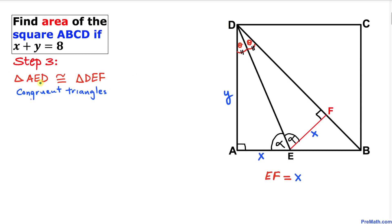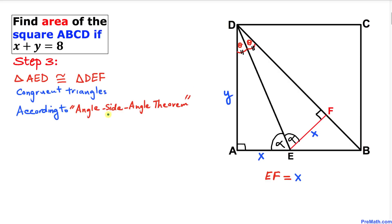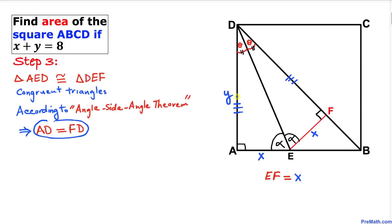We conclude that triangle AED and triangle DEF are congruent triangles according to the Angle-Side-Angle theorem. Both triangles share side DE in common. Since the triangles are congruent, AD equals FD — so if AD is y, then FD is y as well.